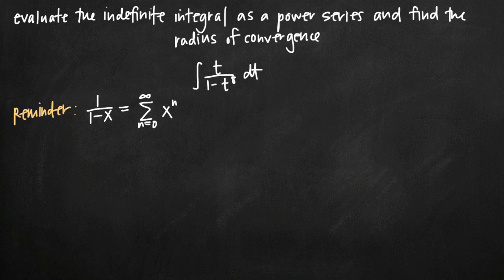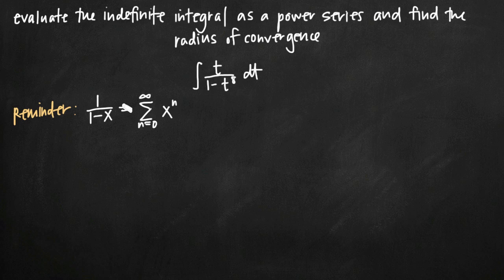The first thing we need to do is find a power series representation of our function t divided by 1 minus t to the 8th. We'll do that by comparing it to the well-known power series: the infinite sum from n equals 0 to infinity of x to the n power, which equals 1 divided by 1 minus x. That looks pretty similar to our original function.